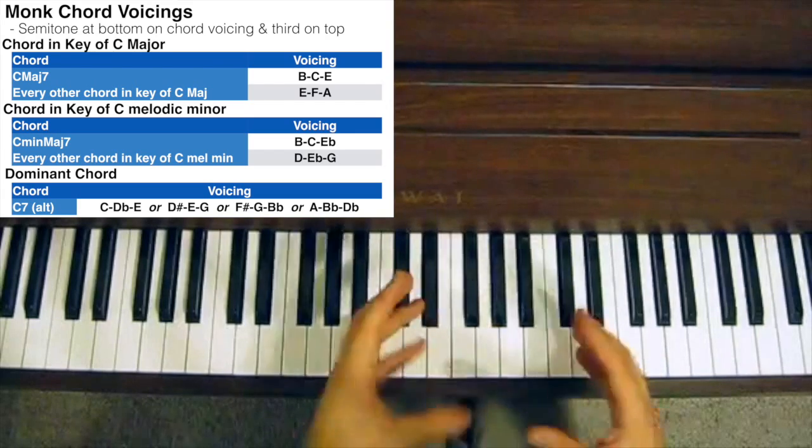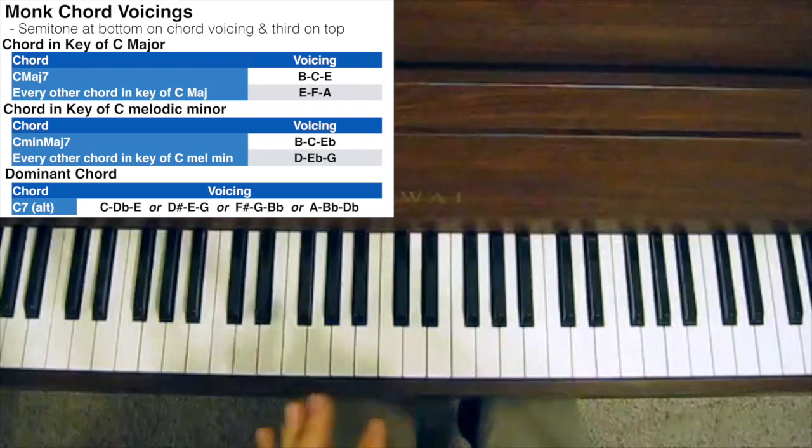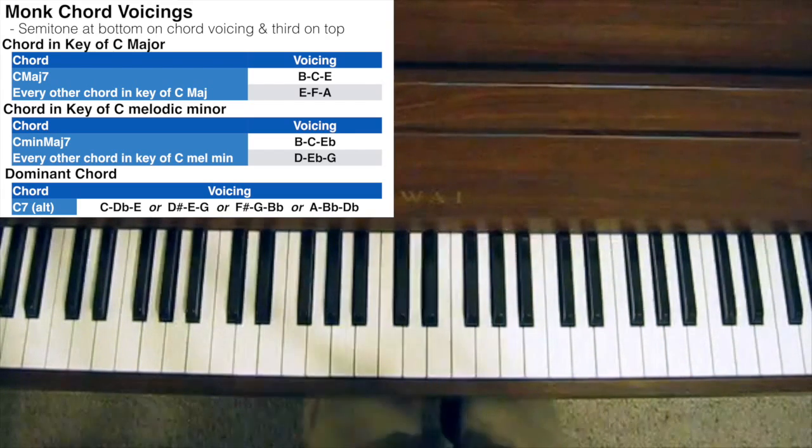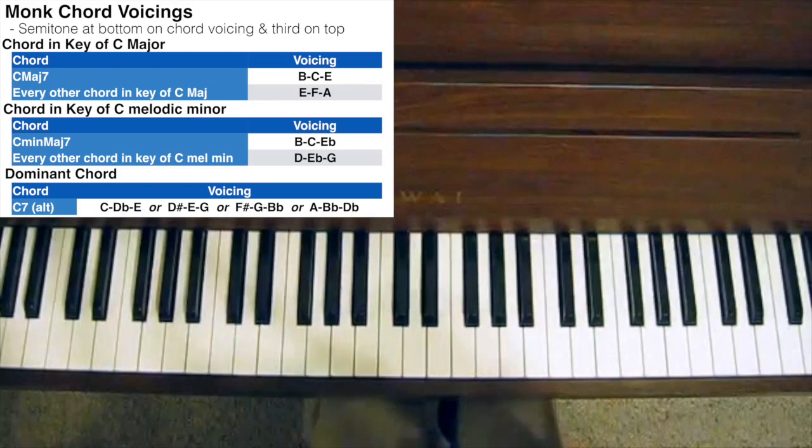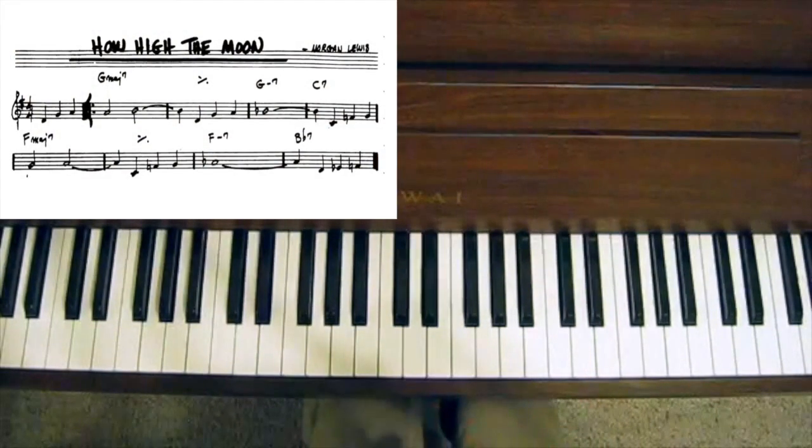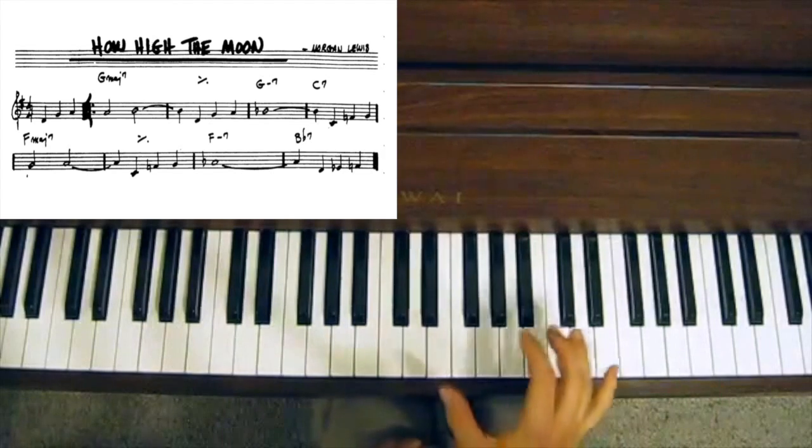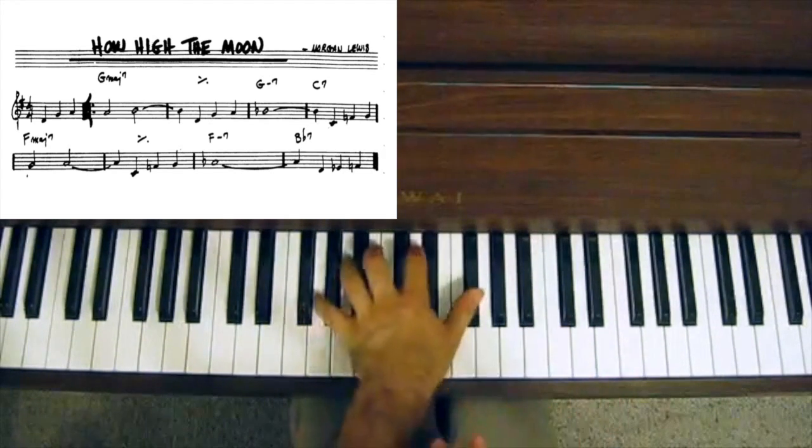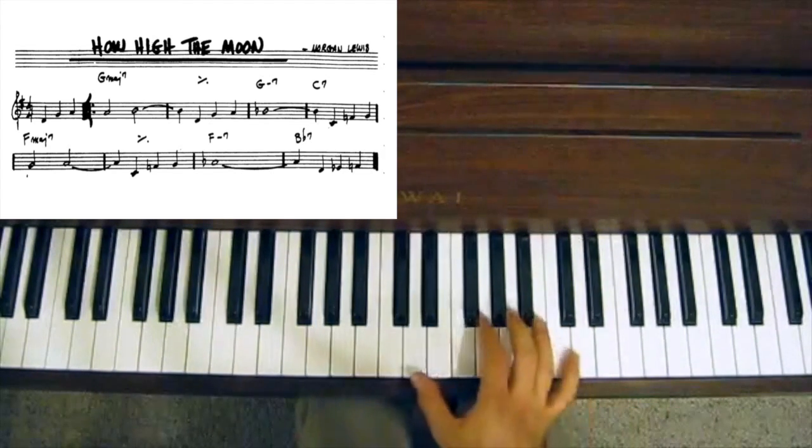You can use those types of extended and altered voicings over a dominant chord. Now let's put this into practice by playing a song. Let's take How High the Moon as our jazz standard. If I were to play that song just using block chords, it would sound like this.